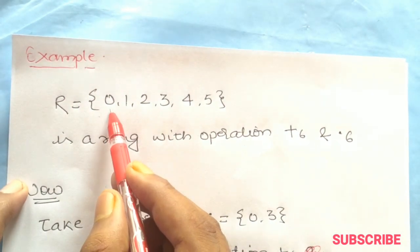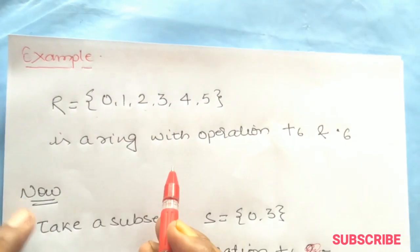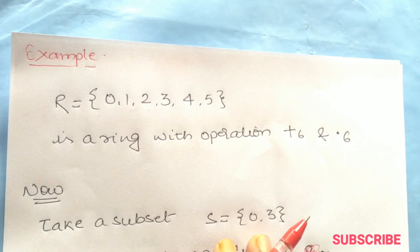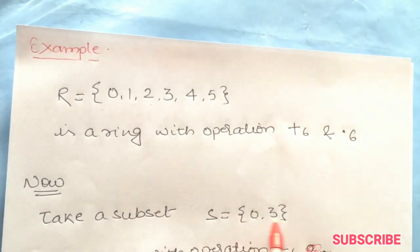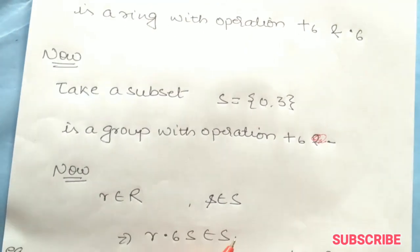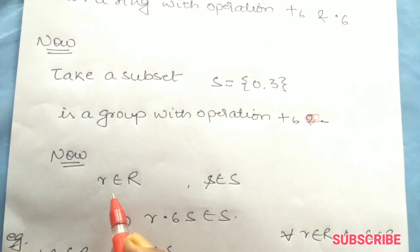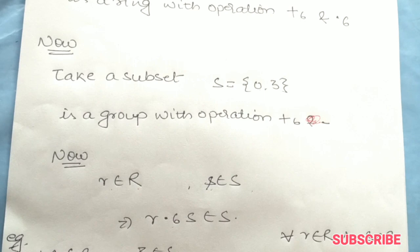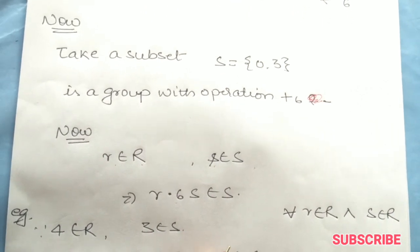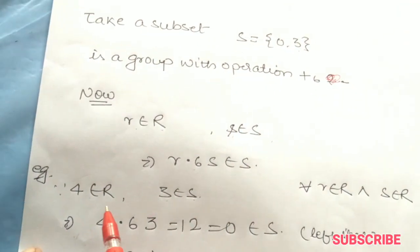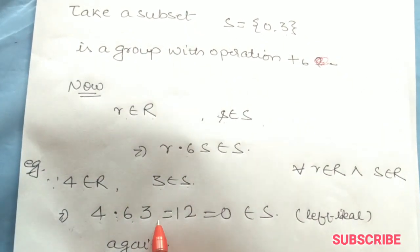The first example: we have a ring Z modulo 6. It will become the set {0, 1, 2, 3, 4, 5}. It will become a ring with plus modulo 6 and multiplication modulo 6. Now I have taken a subset {0, 3} which is a group under addition, so this will be a subgroup under addition property.